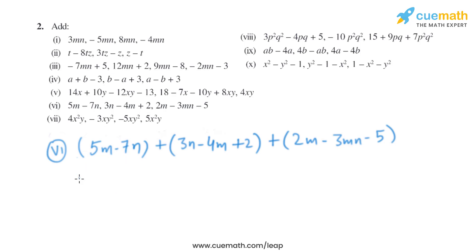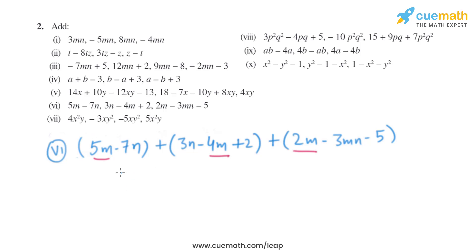The expressions in the sixth part are 5m minus 7n, 3n minus 4m plus 2, and 2m minus 3mn minus 5. The like terms are the terms with m: 5m minus 4m gives us 1m, and plus 2m gives us 3m.